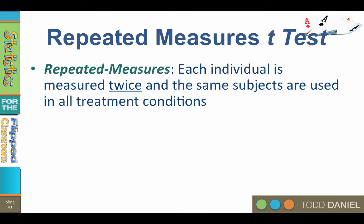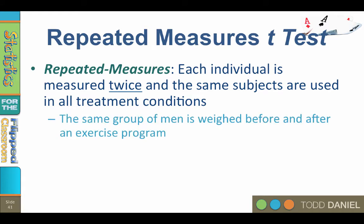Repeated measures are exactly what they say on the label — each individual is measured repeatedly. This is typical of a before and after design, where the same subjects are used in all treatment conditions and the measures of those subjects are repeated. For example, a repeated measures design would be if the same group of men is weighed before and after an exercise program — weighed once before the program and then again after.